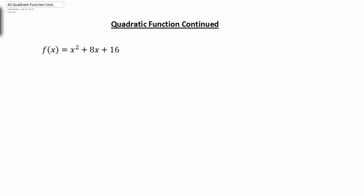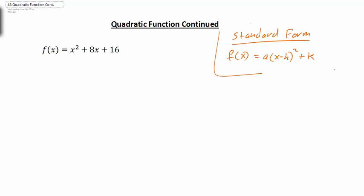This video continues to look at our quadratic function. We had looked at the standard form: f(x) = a(x - h)² + k. We said 'a' tells us whether the parabola is going to open up or down, and h and k represent the vertex — convenient for finding the vertex and the direction of our parabola.